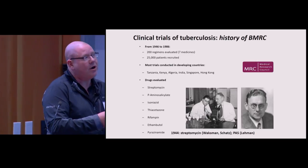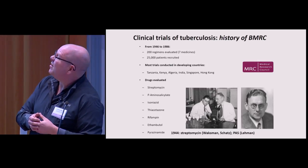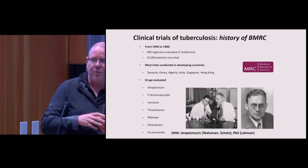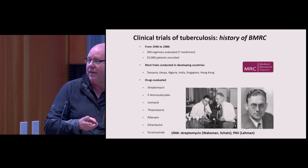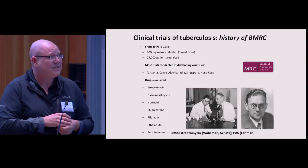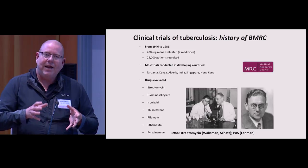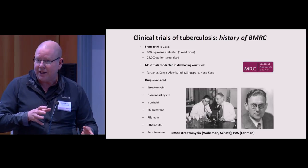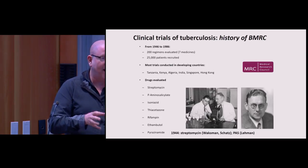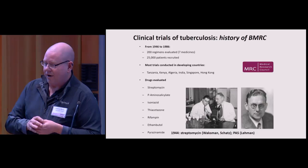I want to point out one more aspect of how we got to where we are. That's a series of clinical trials run by the British Medical Research Council over a 40-year period. They ran 200 different trials in over 25,000 patients in developing countries, mostly in East Africa and some in Asia. Through a strictly empirical process of trial and error, they developed what we call ultra-short course chemotherapy today: two months of four drugs (INH, rifampicin, pyrazinamide, and ethambutol) and four months of isoniazid and rifampicin.